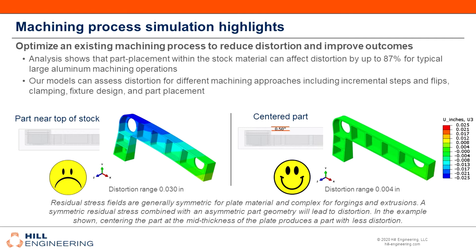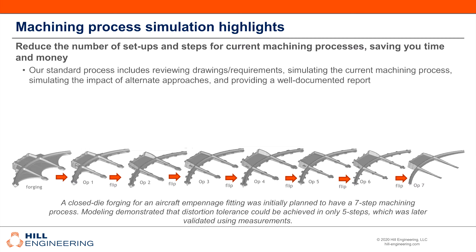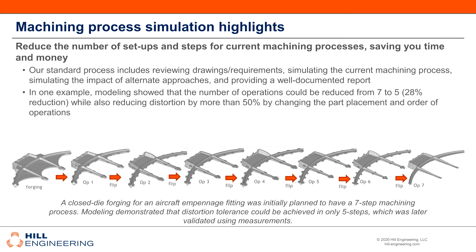You've mentioned improving efficiency too — would you mind going into that a bit more? Of course, that's the focus of my next slide. One of the other benefits of our simulation services is that we take the time to look at the machining process as a whole and determine if there are ways to reduce the number of setups and steps. For example, we can see the machining sequence used to manufacture an aircraft empennage fitting out of a closed-die forging. Initially, this sequence used seven different operations. With machining modeling, that number was reduced to five operations while keeping the finished part within the specified distortion tolerance.